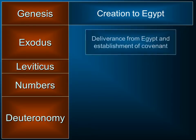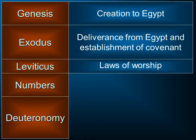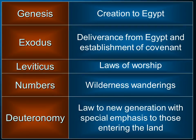Exodus picks up at exactly that location and then tells the story of the deliverance from Egypt and the establishment of the covenant that God makes with Israel. Leviticus picks up right when the Israelites have just received the covenant and the law, and now they are receiving laws of worship as they're told what to do with the tabernacle in their midst. The book of Numbers begins still at Mount Sinai and tells the story of the next 38 years of wandering in the wilderness. Deuteronomy then begins — they're still in the wilderness, but now the next generation is about to go into the land, and it gives laws to the new generation with special emphasis on those entering the land.